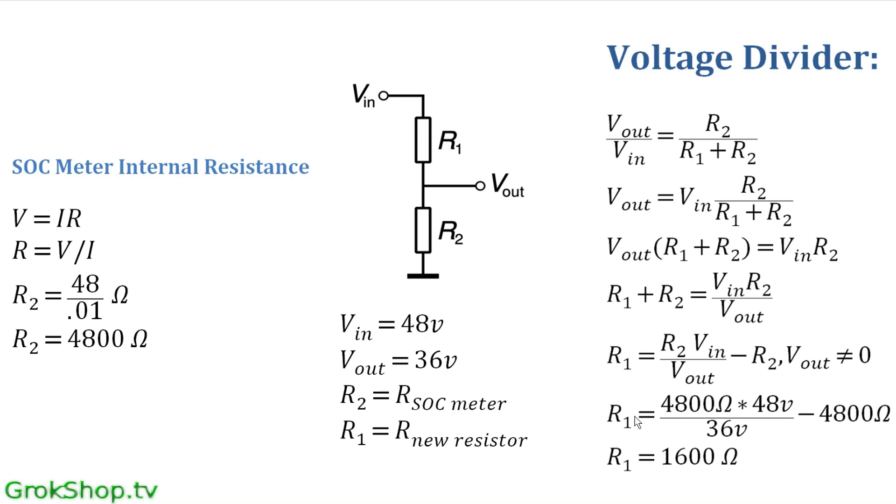Okay, now plugging in the values we know: 4800 ohms for R2, input 48, output 36, and R2 4800 again—I'm sorry.